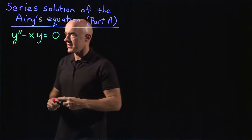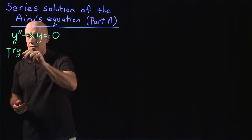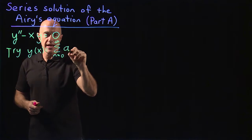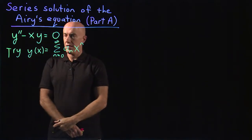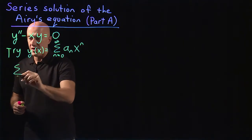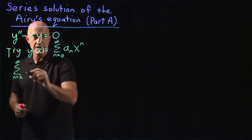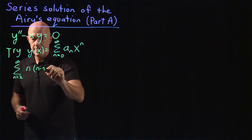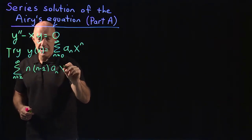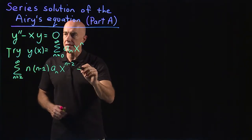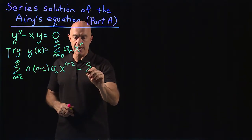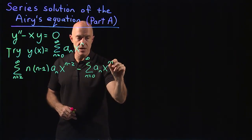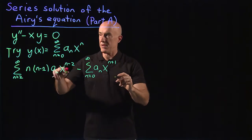We proceed with our Ansatz: try y of x equals the sum from n equals zero to infinity of a sub n times x to the n. Substituting in, we get the sum from n equals two to infinity of n times (n minus one) times a sub n times x to the (n minus two), minus x times y, where x times y is the sum from n equals zero to infinity of a sub n times x to the (n plus one). That's supposed to equal zero.